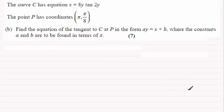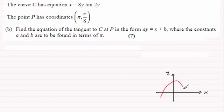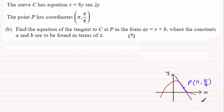To do this, think of the graph. The graph looks pretty complicated, but we've got a point P at (π, π/8) and we're looking for the equation of the tangent to the curve. The equation of a tangent is a straight line with the form y minus y₁ equals m bracket x minus x₁. We've got x₁ is π and y₁ is π/8. What we haven't got is m, the gradient.